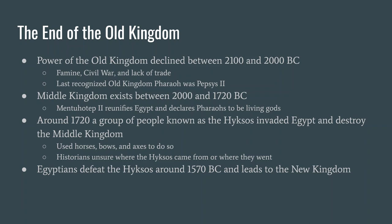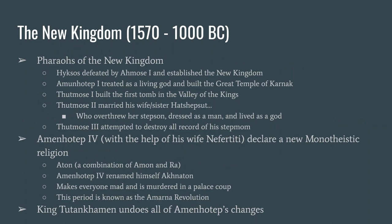The Egyptians learn everything they can from the Hyksos, and about 150 years later, the Hyksos are defeated by the Egyptians who use their own weapons against them. Once the Egyptians defeat the Hyksos and kick them out, that leads to the New Kingdom — roughly 1570 to 1000 BC. All the kings of the New Kingdom are pharaohs, and they all consider themselves living gods.